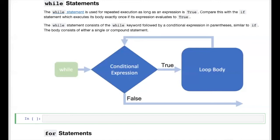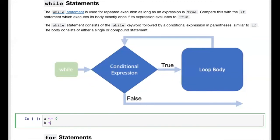To start our example, we're going to define the first two elements as 0 and 1. We assign the variable a the value of 0, and the variable b the value 1. In this loop, the variable a will always contain the current value in the sequence, and b will always be the next value. This means our while loop will continue to run as long as the current element a is less than 10.